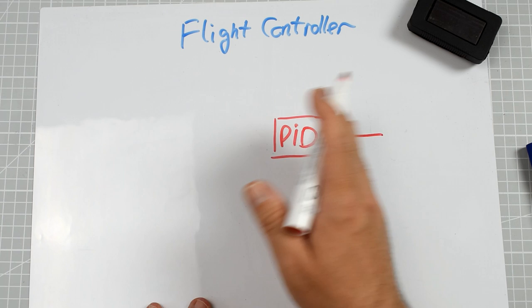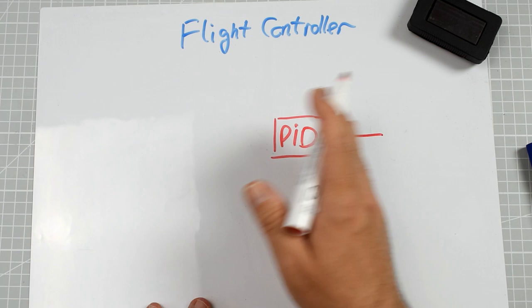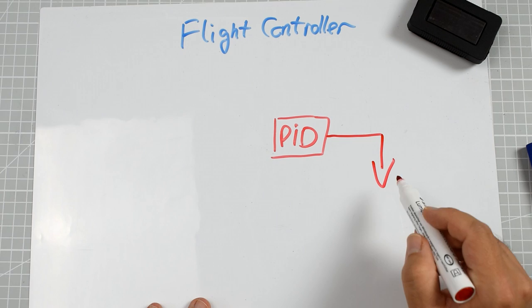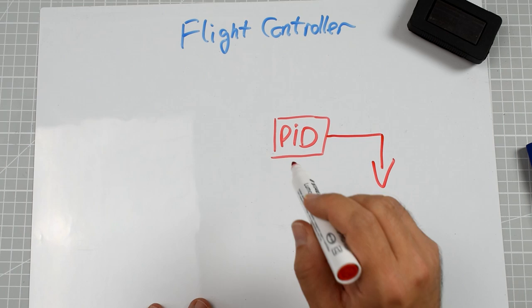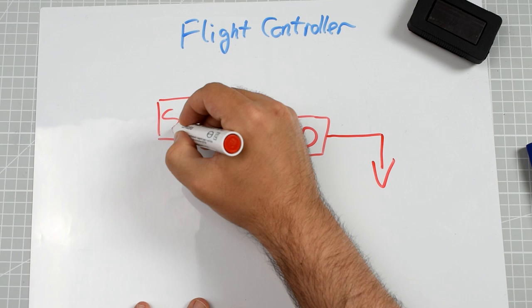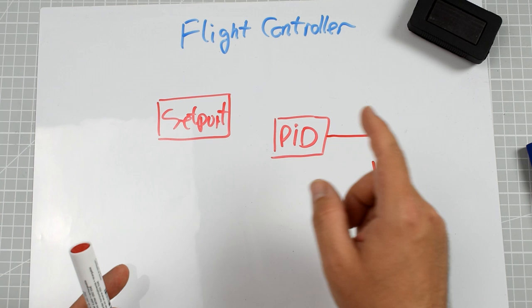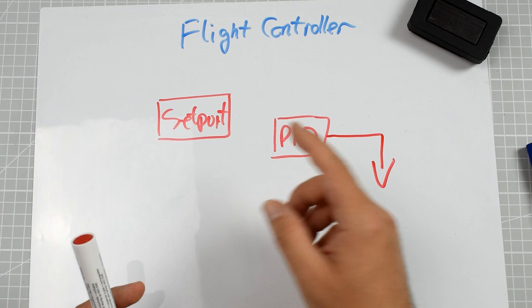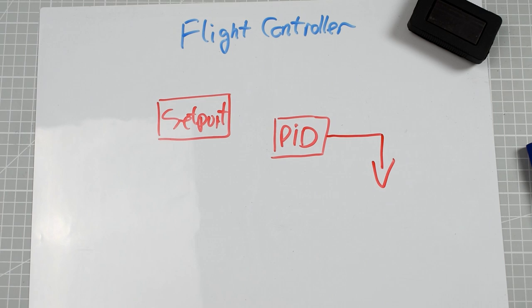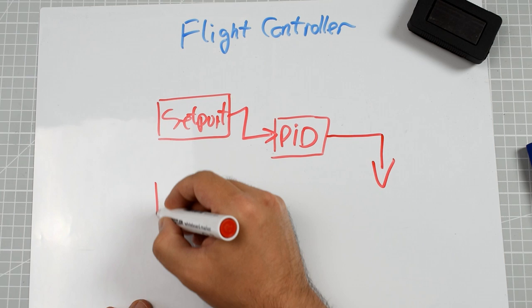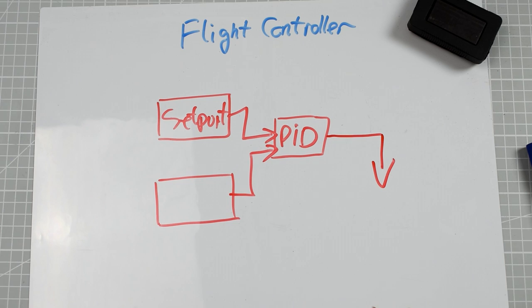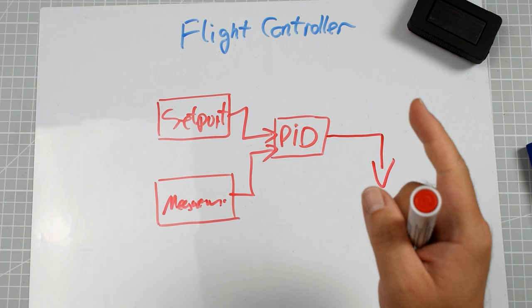Before we go into the output side of the PID controller, let's look at what's inserted into it. First of all, there's the set point. The set point is the position of the sticks. If you take your radio and move the roll stick to the right, the information about the set point — that you ordered a rotation to the right — is received from the receiver, converted to a set point, and fed into the PID controller. The same applies to the measurement, which is the rotation rate read by the gyroscope.